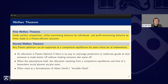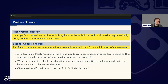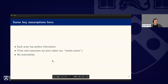The second welfare theorem is a sort of flip of the first: any Pareto optimum can be supported as a competitive equilibrium for some initial set of endowments. Essentially, any equilibrium or any allocation is Pareto optimal. This is a formalization of Adam Smith's invisible hand, worked on by economists in the 20th century.